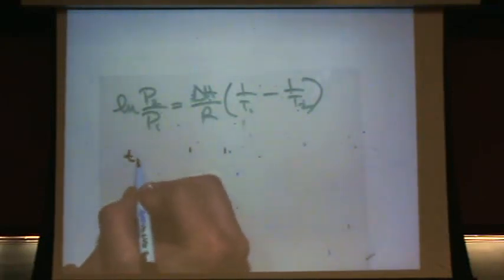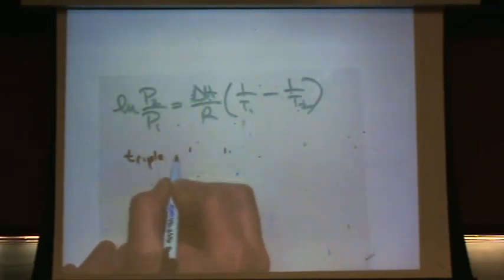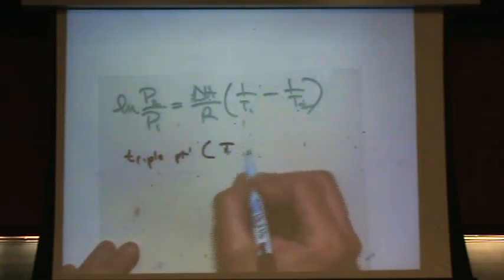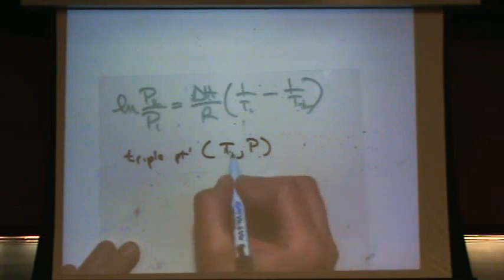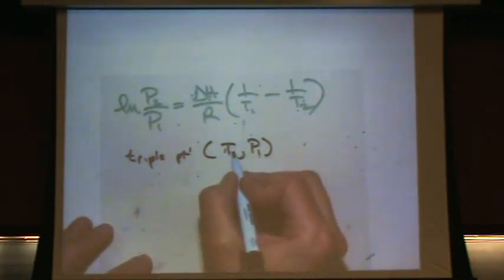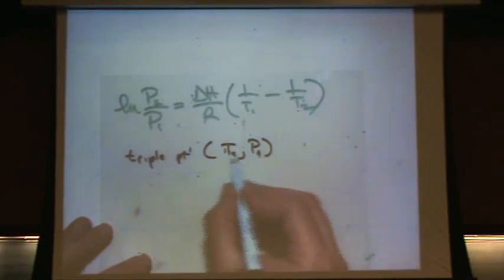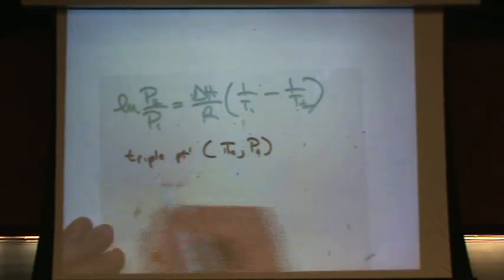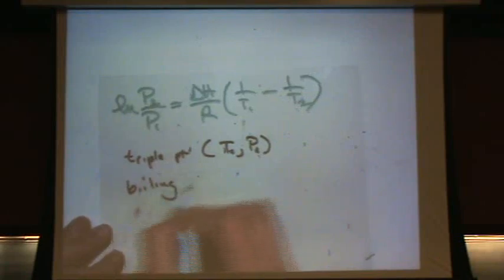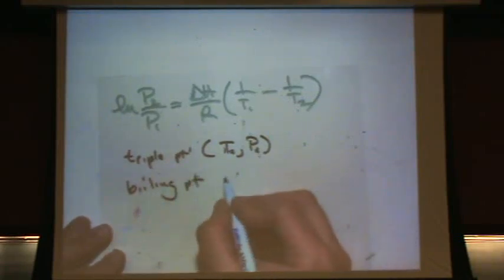So, when it happened, in that problem, it gave us three things. It gave us the triple point. I'll just call that T1P1, or A. I'll call it A, not to mix the one and the one. TA, PA. Okay, it also gave us the boiling point.